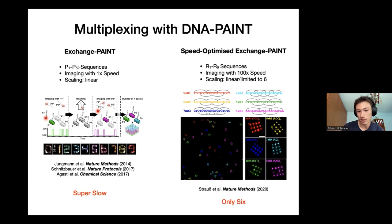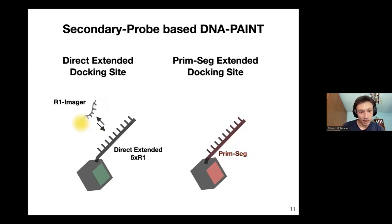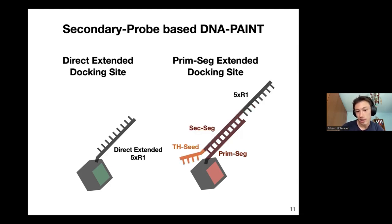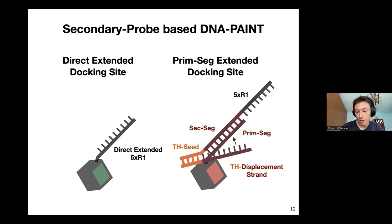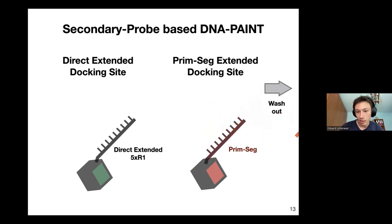So standard Exchange-PAINT is very slow, and speed-optimized Exchange-PAINT is limited to only six targets. What I basically did during my PhD was trying to decouple this again. On the left side you can see standard DNA-PAINT with just the R1 sequence; on the right side is a primary-segment extended docking set — a concept taken from standard DNA-FISH — where we have a 20-nucleotide long sequence onto which we hybridize a secondary sequence carrying the readout sequence 5xR1 and a toehold site. After imaging, we flush in a displacement strand to remove the first sequence.